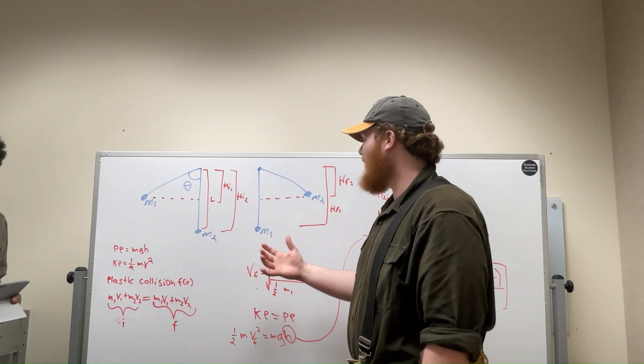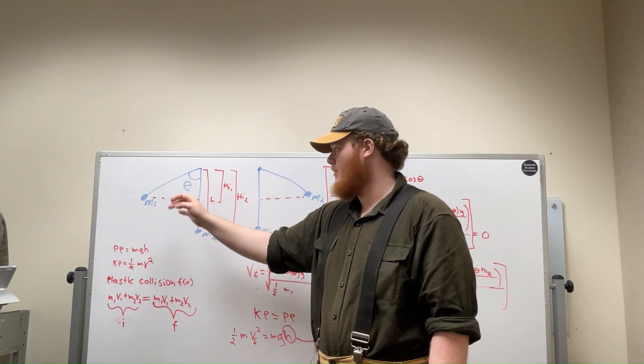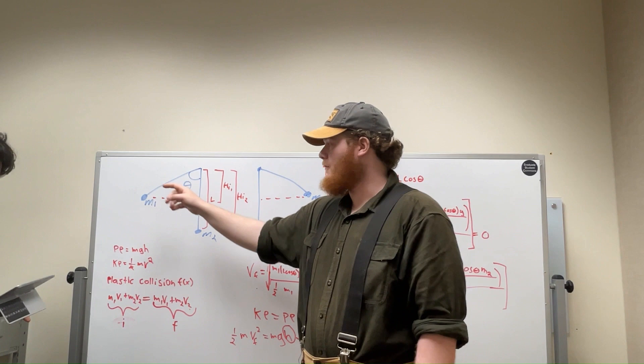For how we got our answer, we made a diagram of a before and after the pendulum swings. Before the pendulum swings, it is at some degree, both lengths of the rope are the exact same, the same length L.